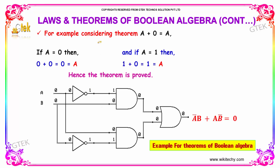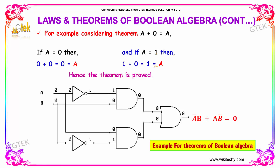A typical example of the previous theorem: a plus 0 is equal to a. If a equals 0, then 0 plus 0 is equal to 0, which is the value of a. And if a is equal to 1, then 1 plus 0 is equal to 1, so a is equal to 1. Hence the theorem is proved.